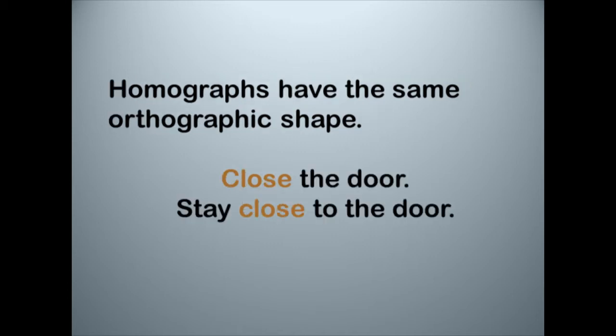Now look at this pair of words: 'Close the door' and 'Stay close to the door.' Close and close are not the same word. They do have the same spelling, but they don't sound the same. Moreover, one is a verb and another is an adjective. They have different meanings. They're different words, but they have the same orthographic shape — they're spelled the same. So if we say a word has the same shape and we don't distinguish phonological or orthographic, what we mean is both: the same spelling and the same sound.